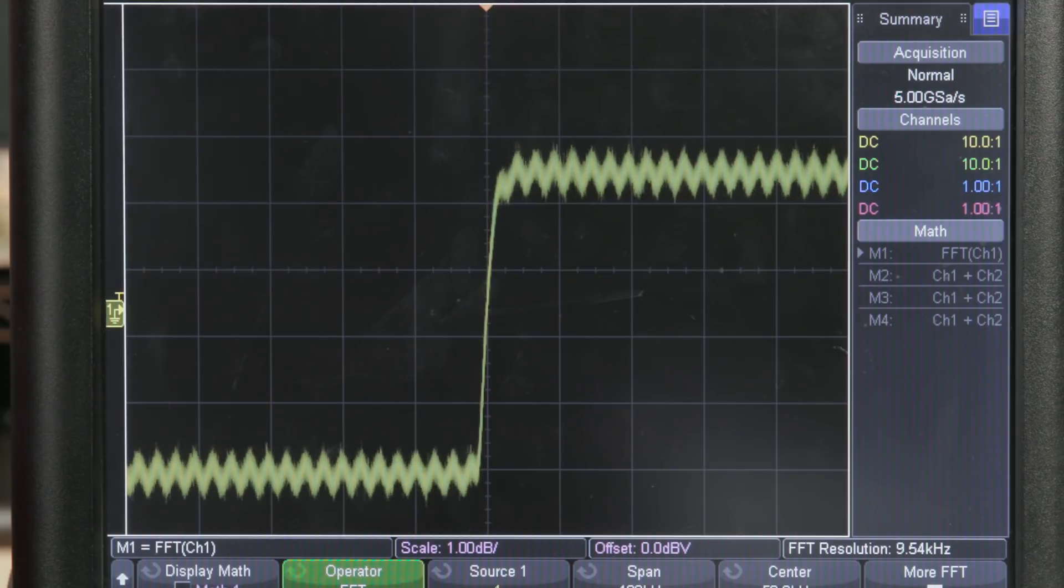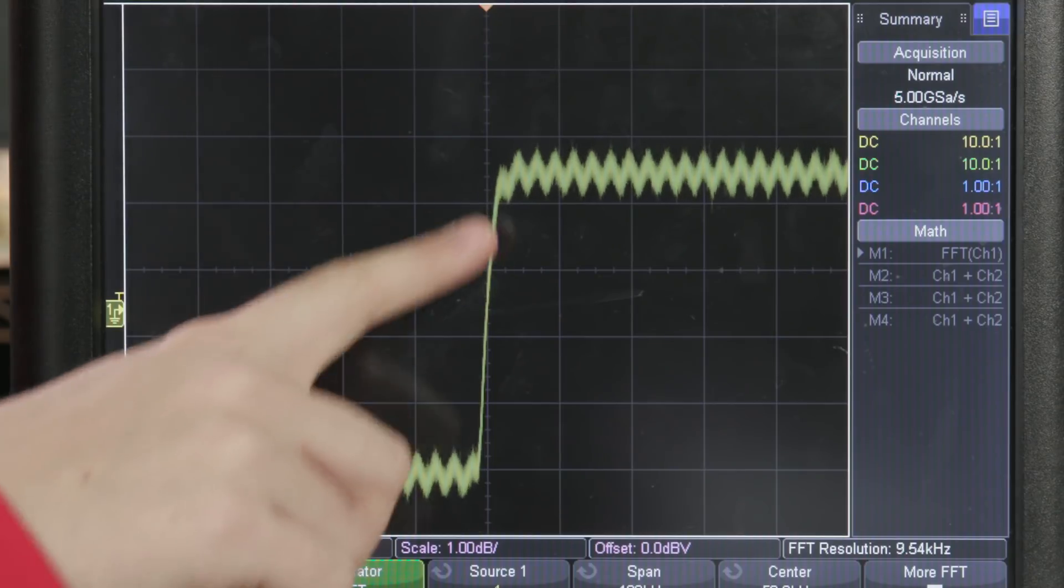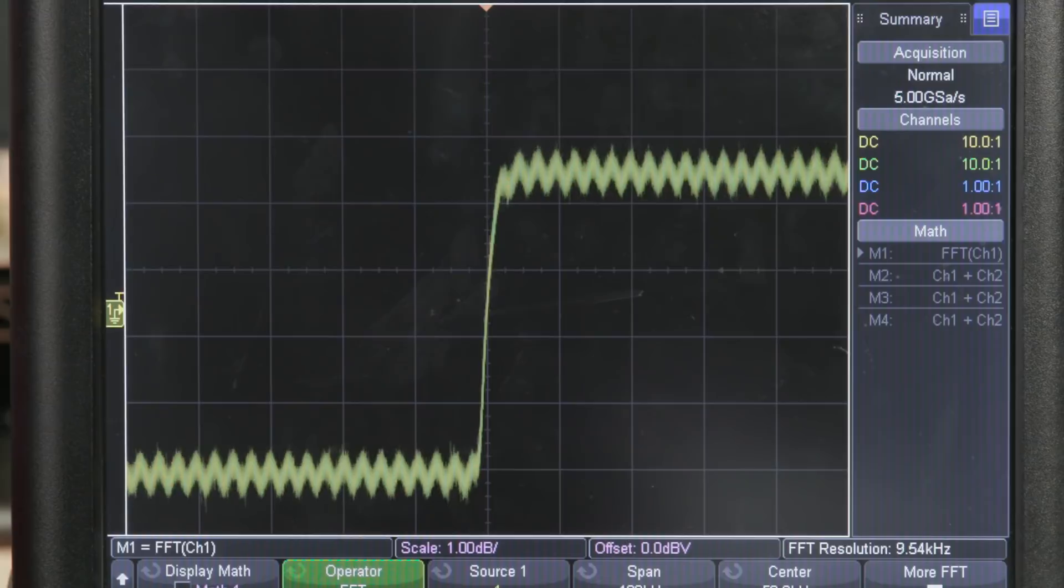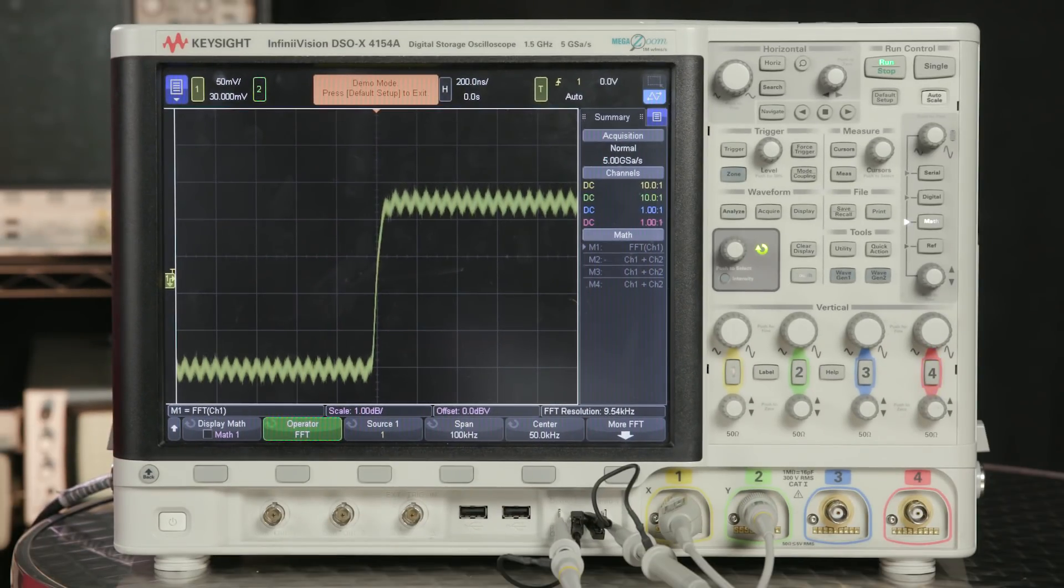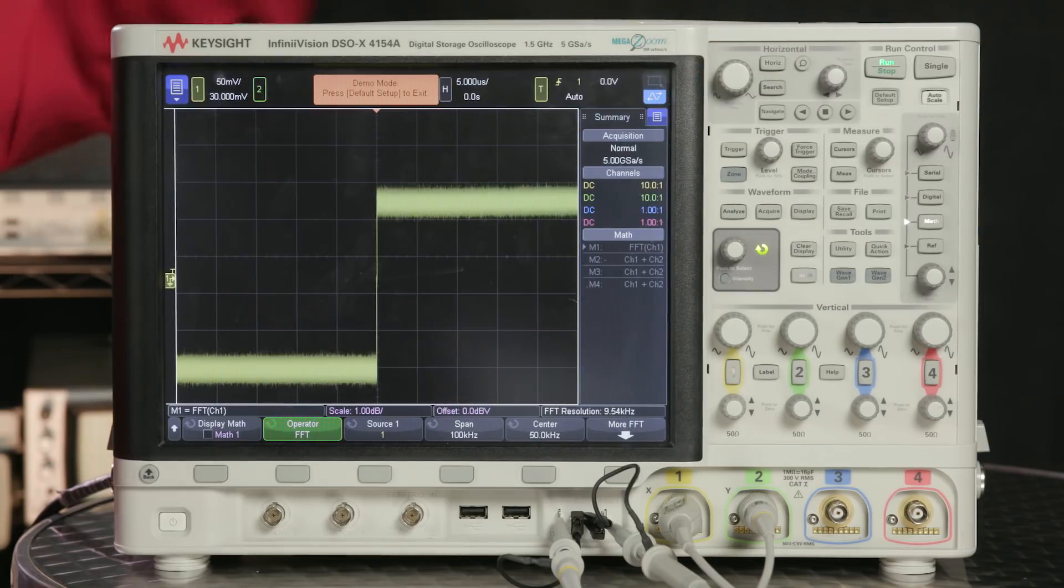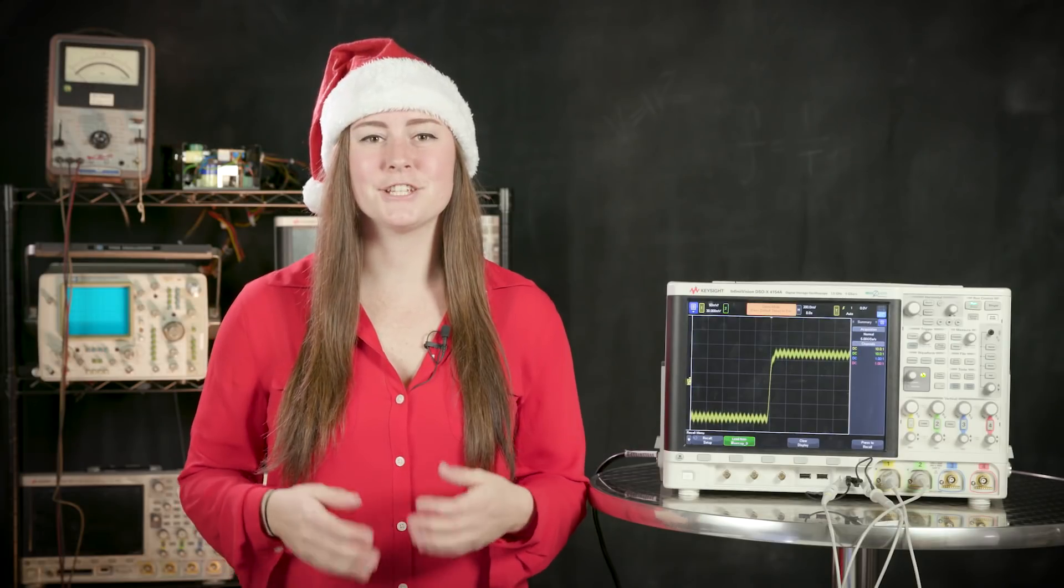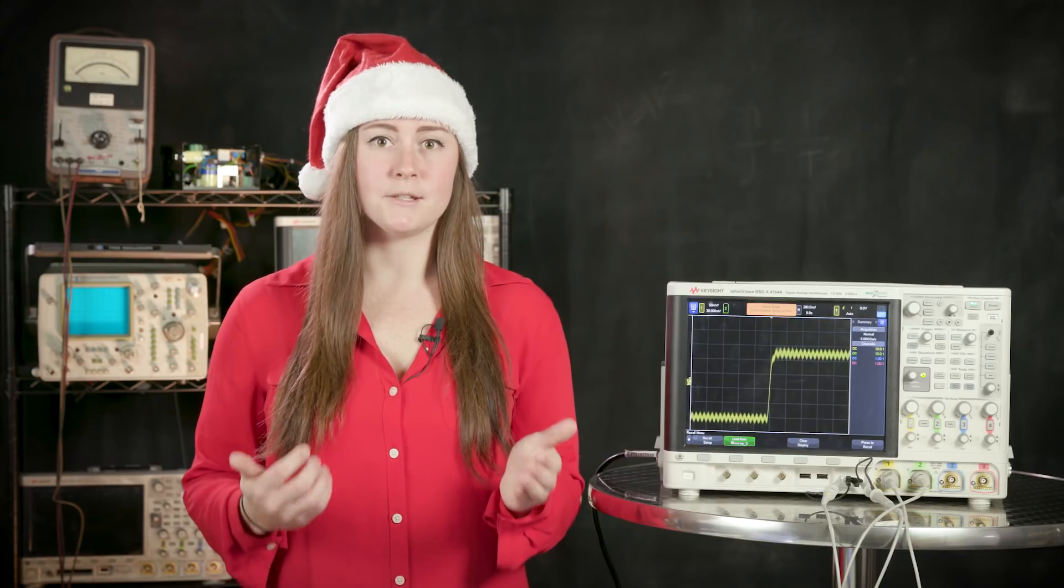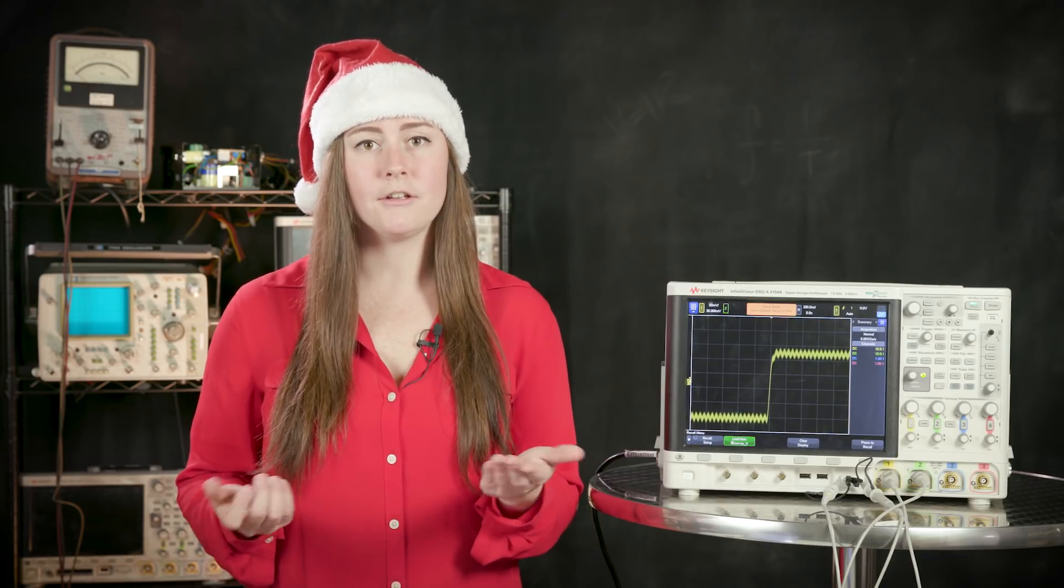The signal we're looking at here is just a normal clock signal that appears to have some high frequency noise riding on it, so we're going to identify the source of this noise. The first thing I want to do is zoom out on the time base of the signal a little bit. An FFT is just a math function, and the more data that math function has to work with, the more accurately it can calculate.